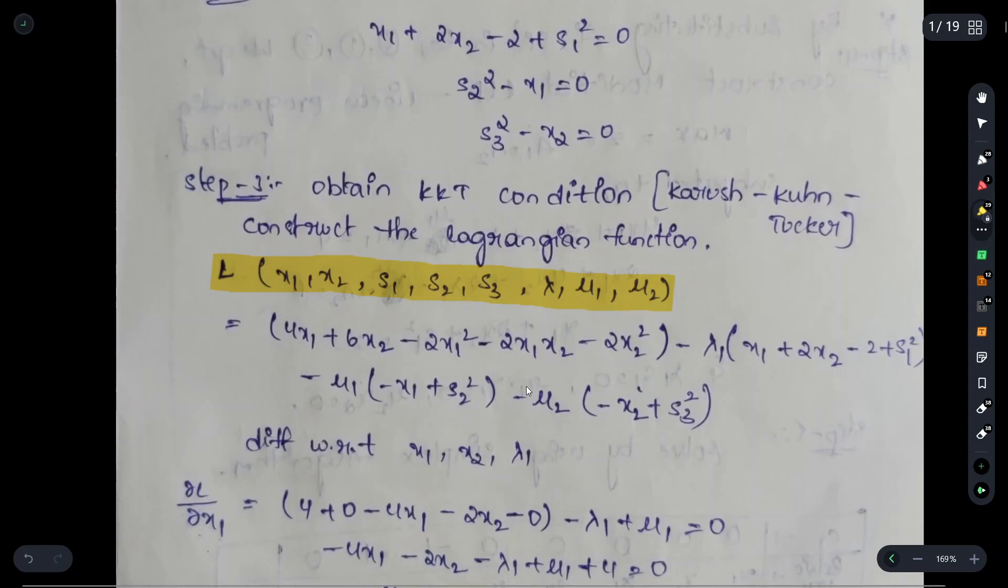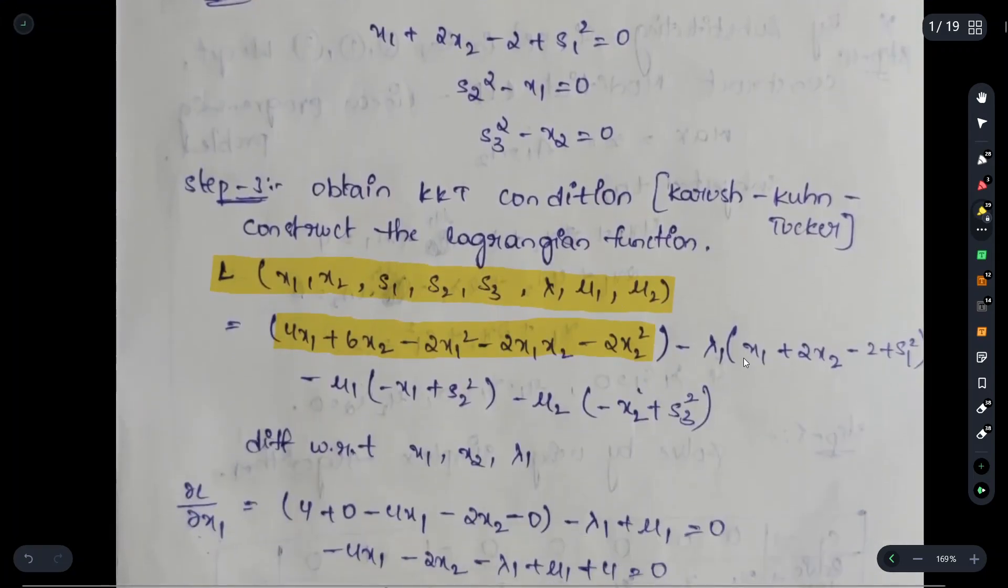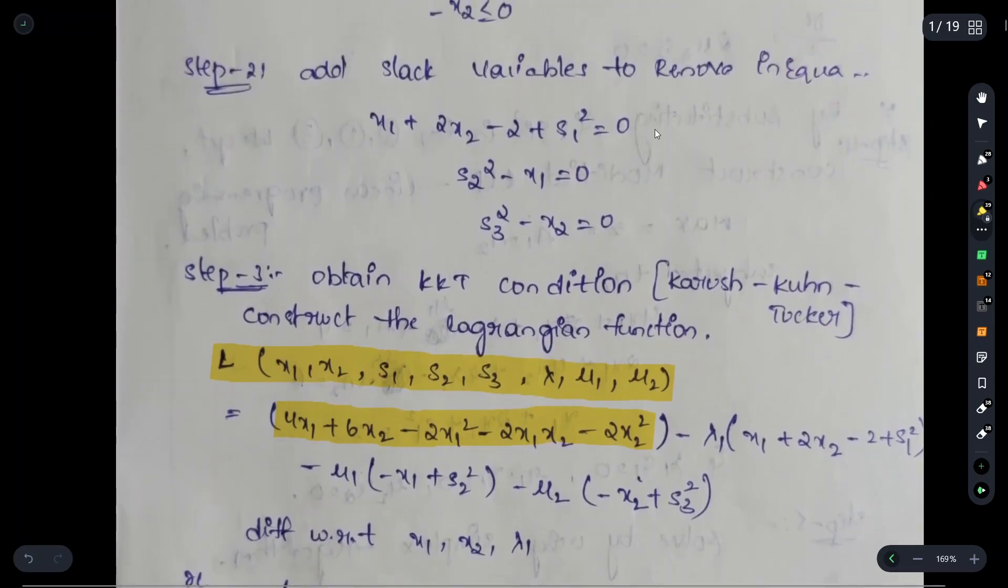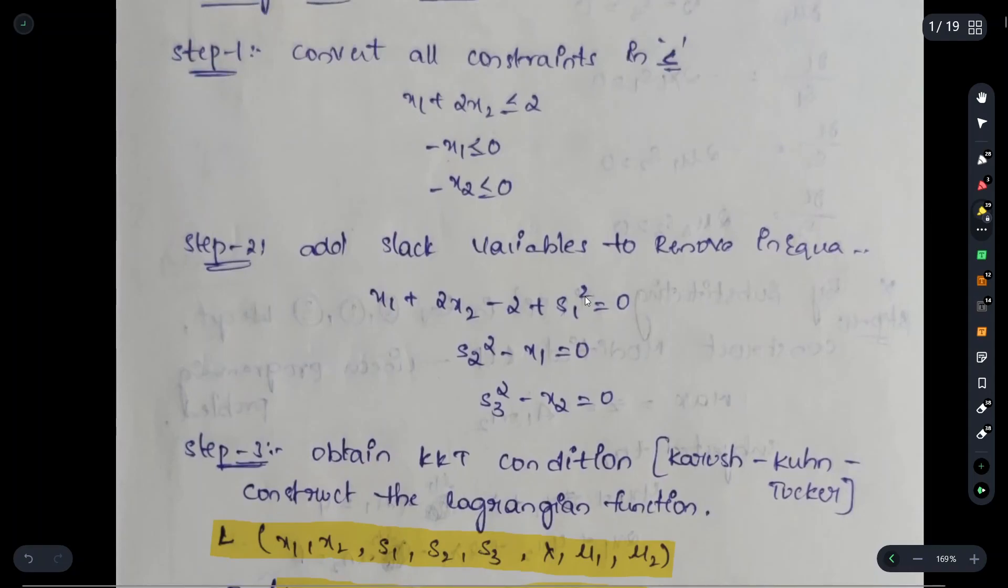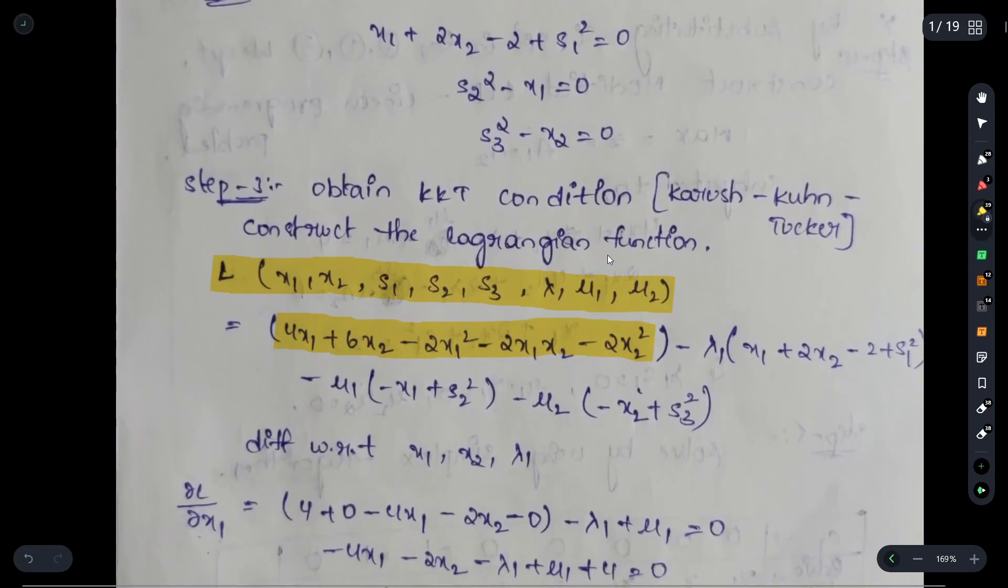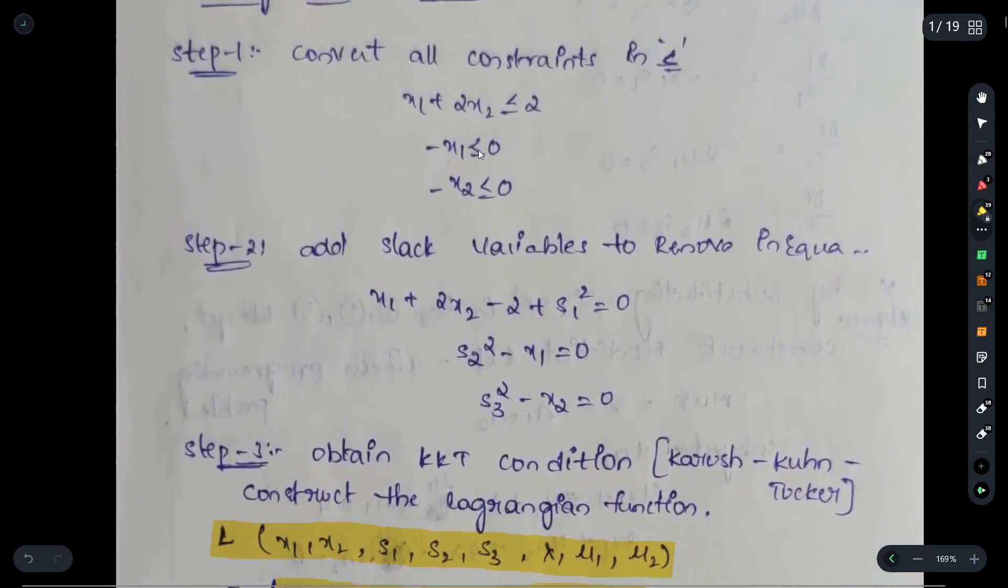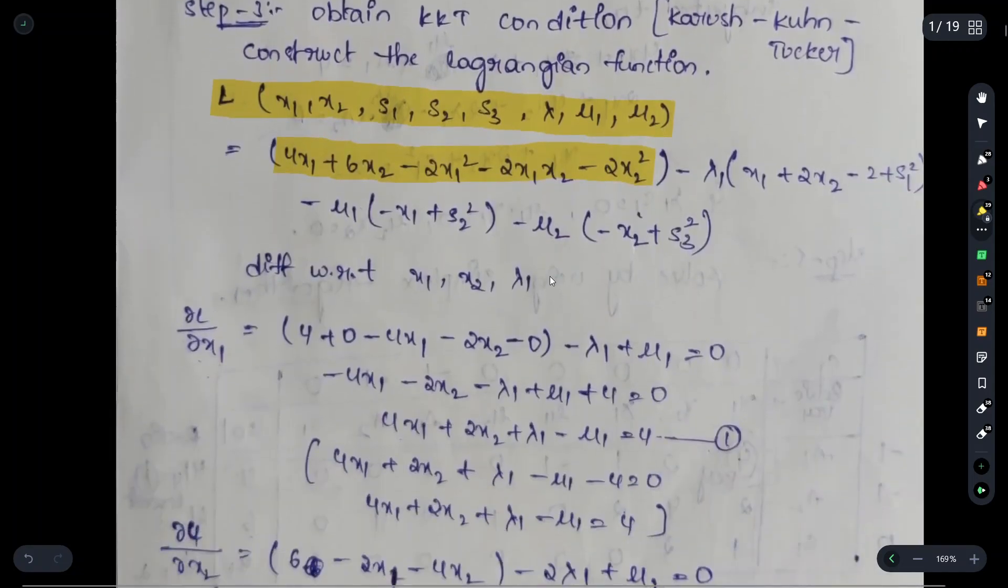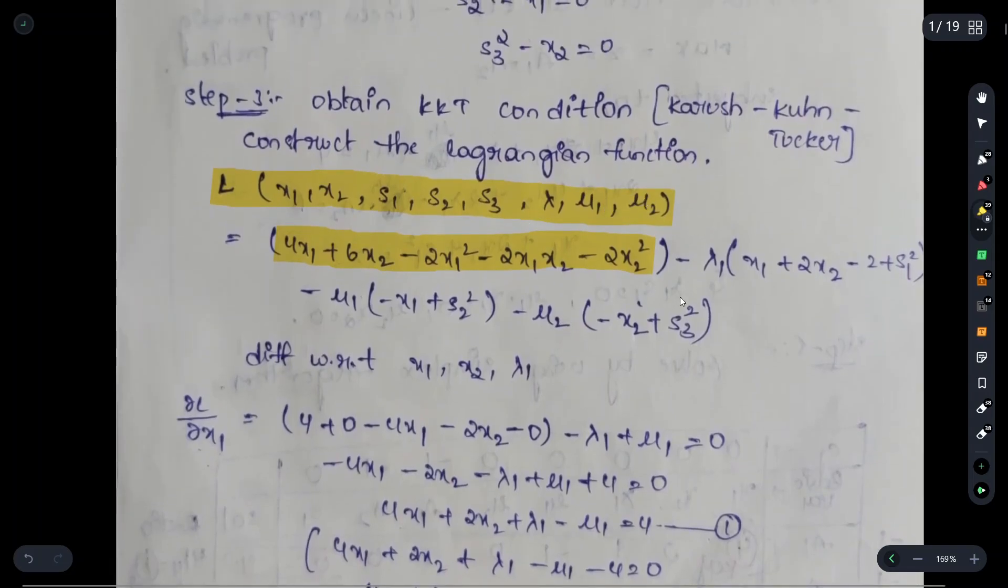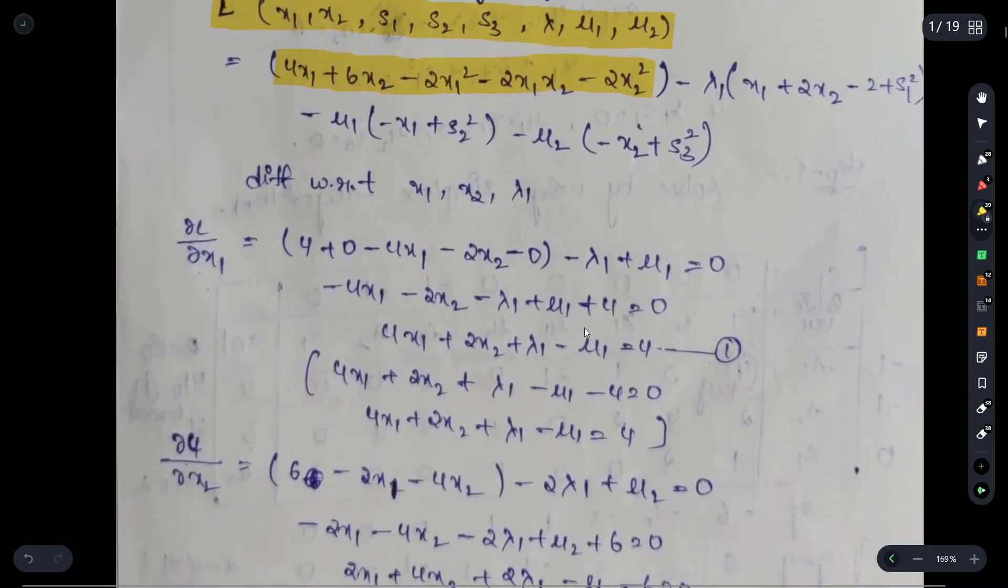Now according to KKT condition, we need to construct a Lagrangian function. Compared to these big lengthy problems, this construction is a bit easy. This is nothing but the z equation, minus lambda 1 into this equation, minus mu1 into this equation. We need to do 3 differentiations.